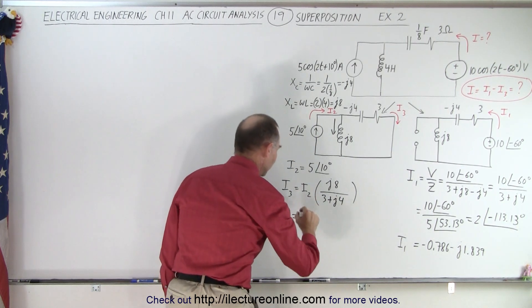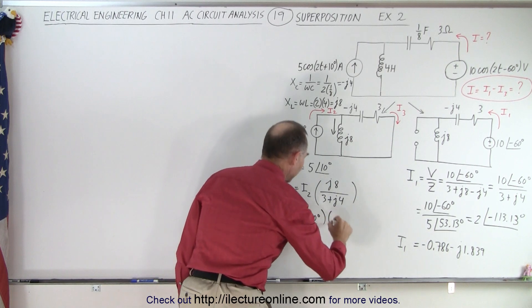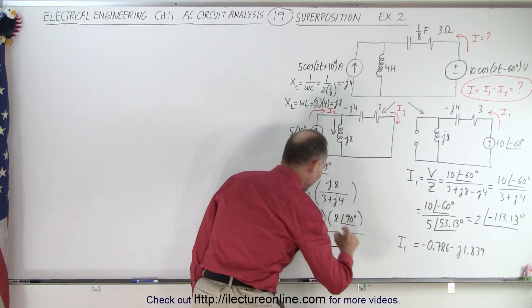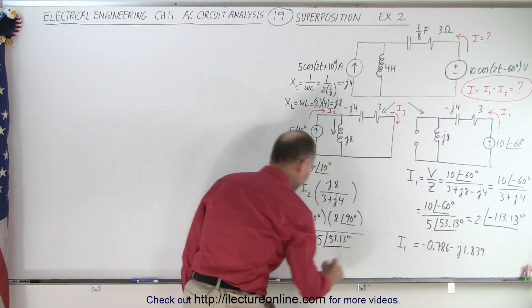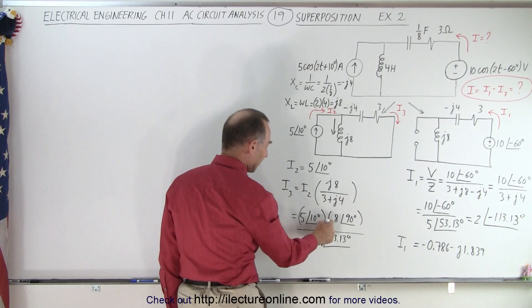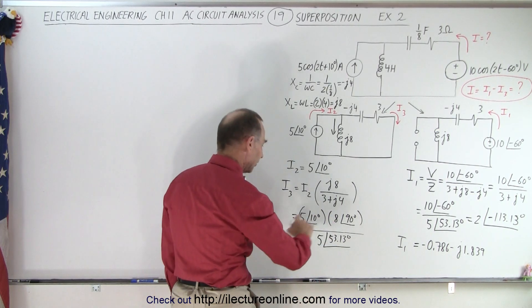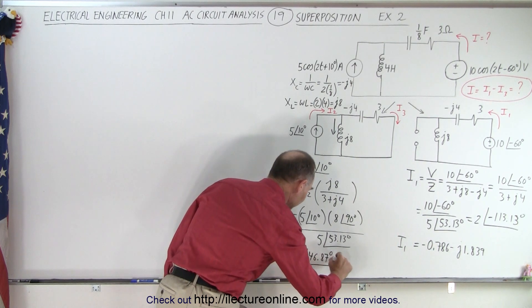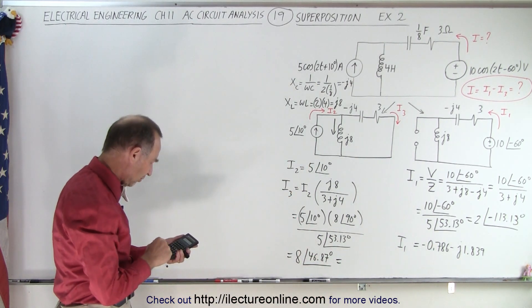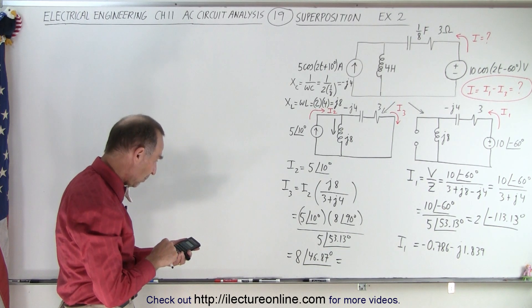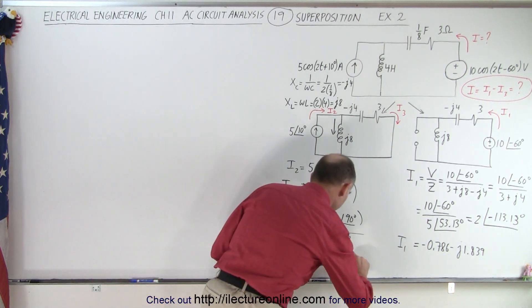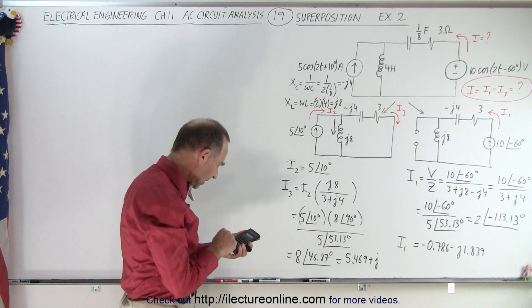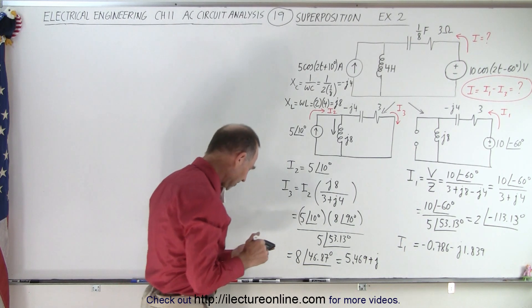Now we have to write it as I2, which is 5∠10°, multiply times J8, which is 8∠90°, and divide that by 3, 4, 5, which is 5 times a phase angle of 53.13°. 5 divided by 5, that's easy. We have 8, phase angle of 100 minus 53.13, that would be phase angle of 46.87°. We're going to write it as real and imaginary part, so 46.87, take the cosine, multiply times 8, we get 5.469 for the real part. And plus J, the imaginary part will be 46.87, take the sine, times 8 equals 5.838.